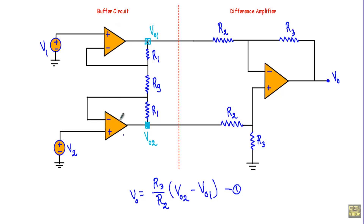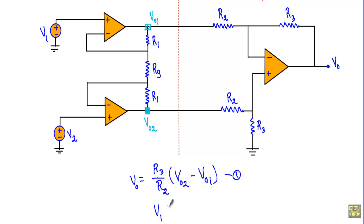This is one buffer and this is another buffer. At this non-inverting terminal I am applying voltage V1, and at this non-inverting terminal I am applying voltage V2. Let's say the value of V1 is greater than V2. The output terminal of this op-amp is connected with the inverting terminal through resistor R1, placing this op-amp in negative feedback. Similarly, this other op-amp is also in negative feedback.